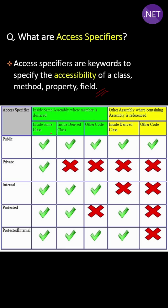Here is a table that shows where these keywords are accessible. For example, a public method in a class is accessible at every level: inside the same class, a derived class, inside some other class, inside a derived class of some other assembly, and inside some other class of some other assembly.